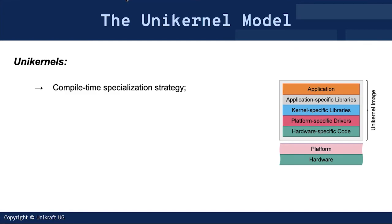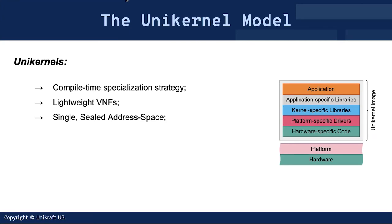A unikernel is a type of compile-time specialization strategy where you take your application — your VNF — and turn it into something bespoke at compile time. It's a great use case for lightweight VNFs. It has a single sealed address space, so the application code and kernel share the same memory space, which means there is no costly syscall. A syscall is typically a guard between the kernel and user space that checks whether you have permission to read or write a file or open a socket. Without this guard, the call itself doesn't spend CPU instructions checking permissions.